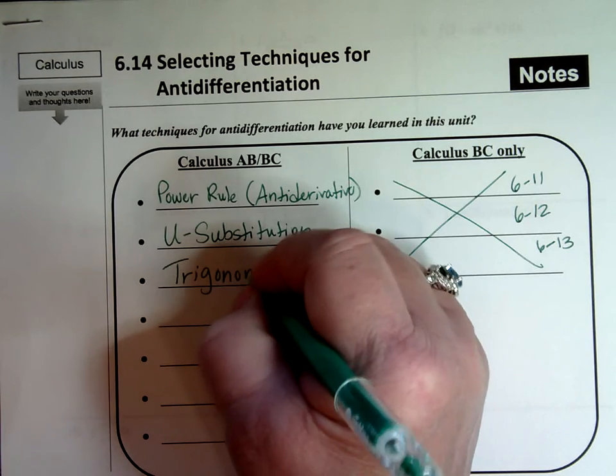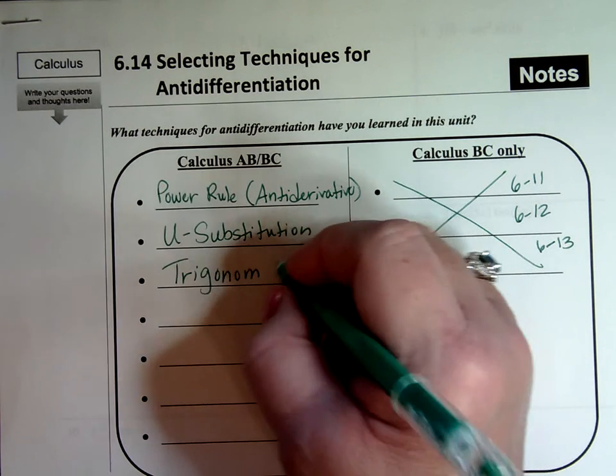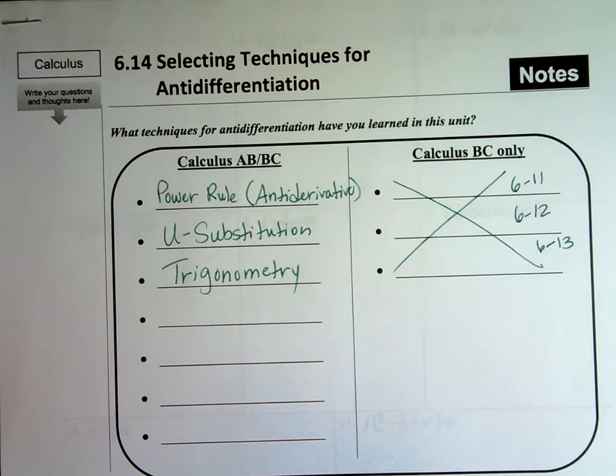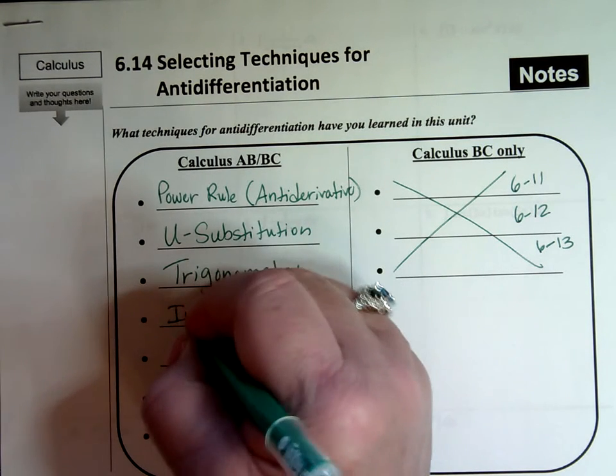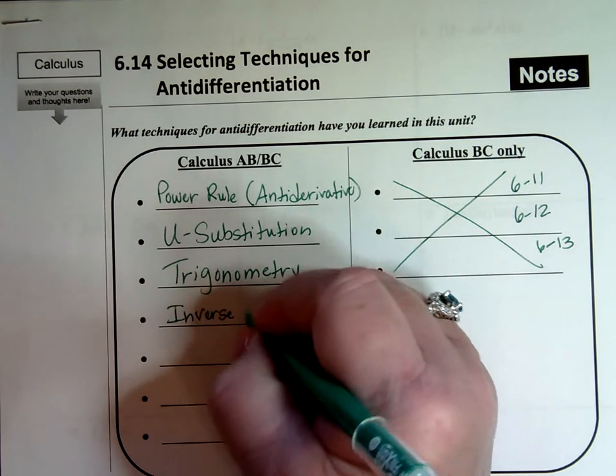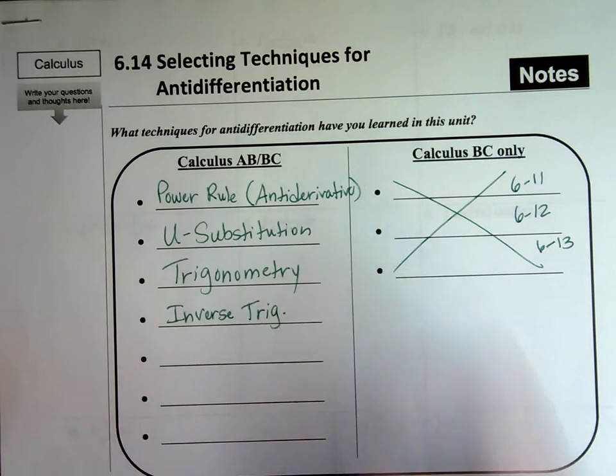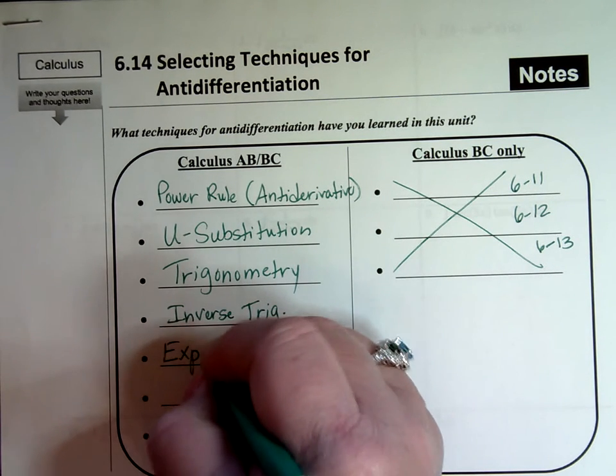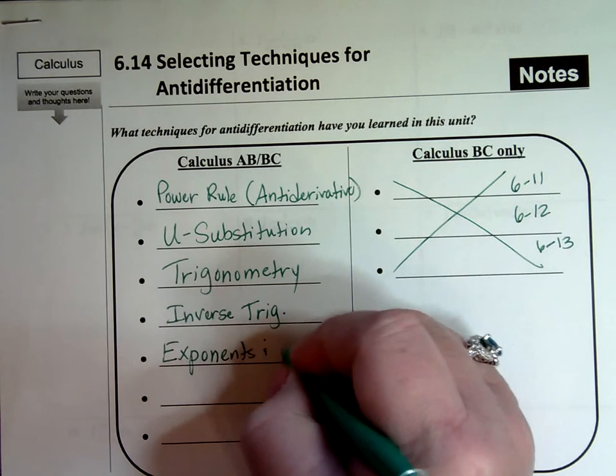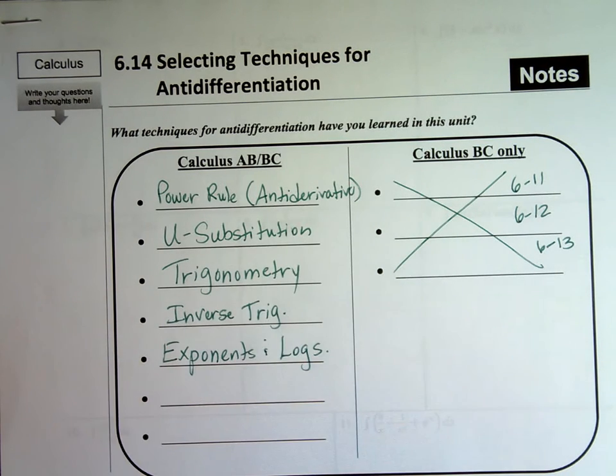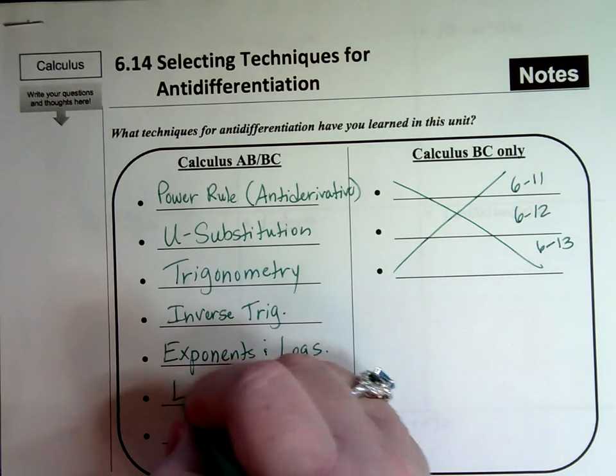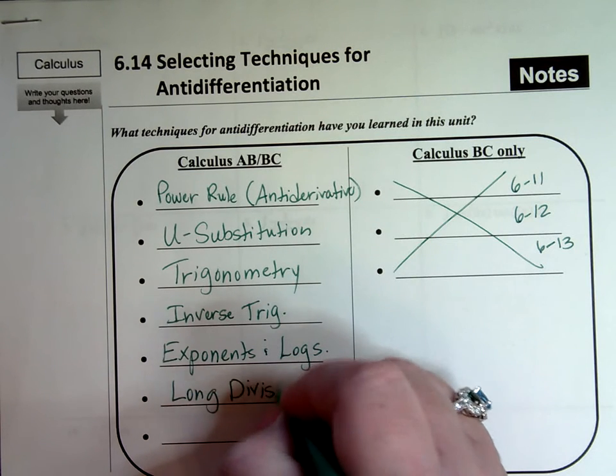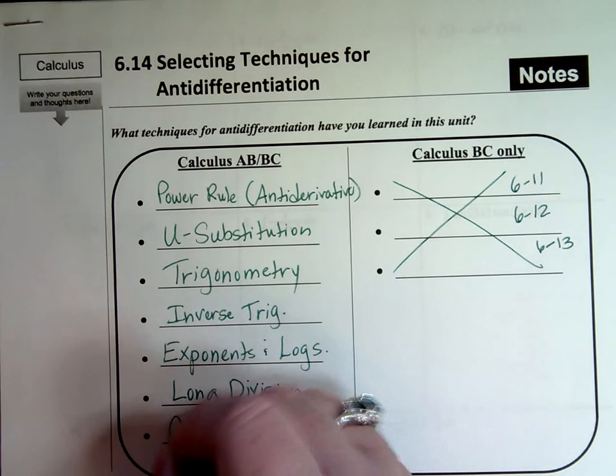Remember, we simplified some of the functions into their trig identities to make it easier for us to integrate. We had to keep in mind the inverse trig rules. We had exponents and logarithms that we looked at. And we had long division. That was just on the last section. And the last thing we did in the last section was completing the square.